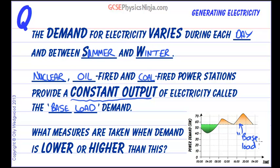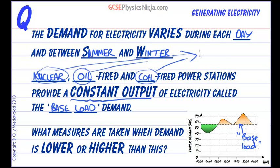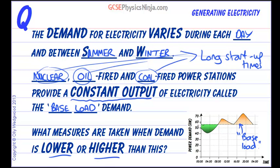Nuclear, oil, and coal provide the base load because these three methods of generating electricity have quite long start-up times. It's quite complicated to bring them online and take them offline quickly, so we just leave them running to give a constant output. That begs the question: what measures are taken when demand is lower or higher than this base load?